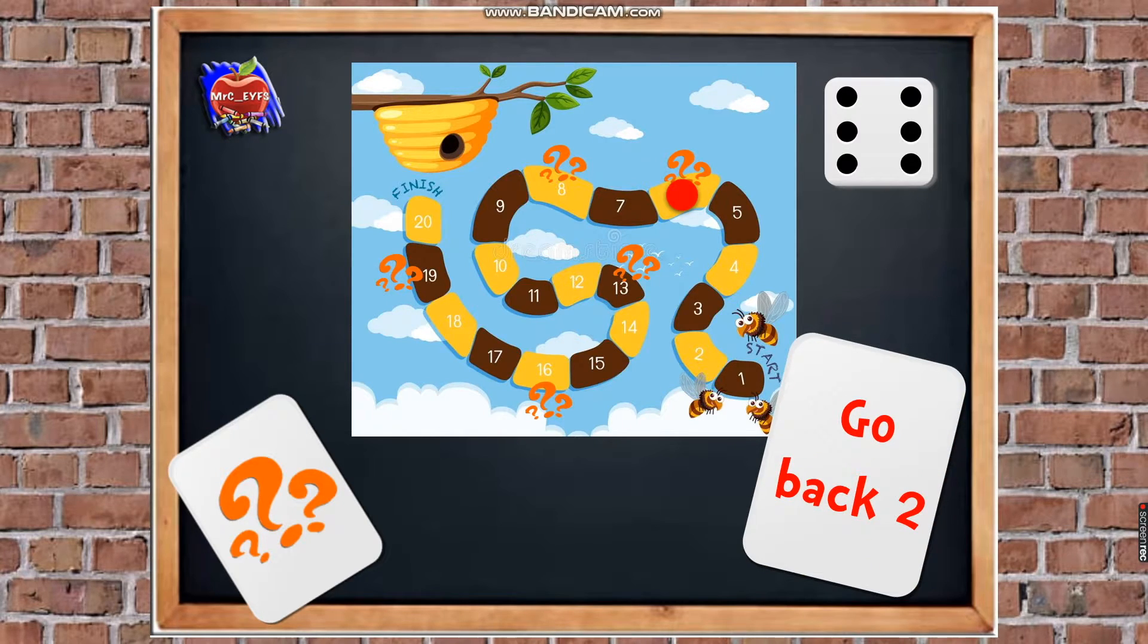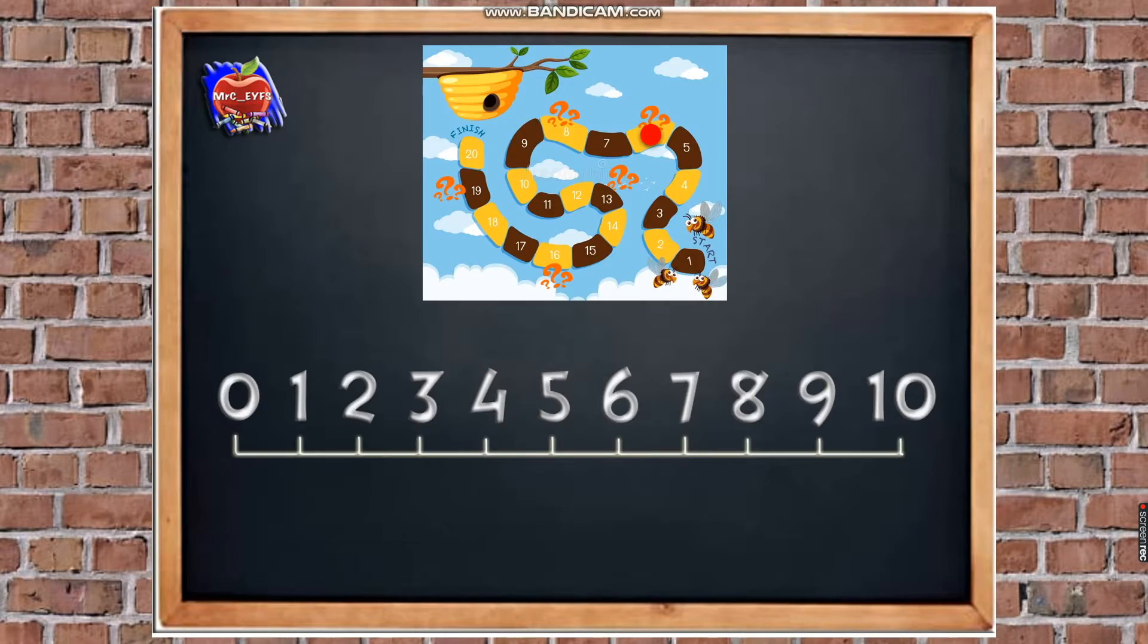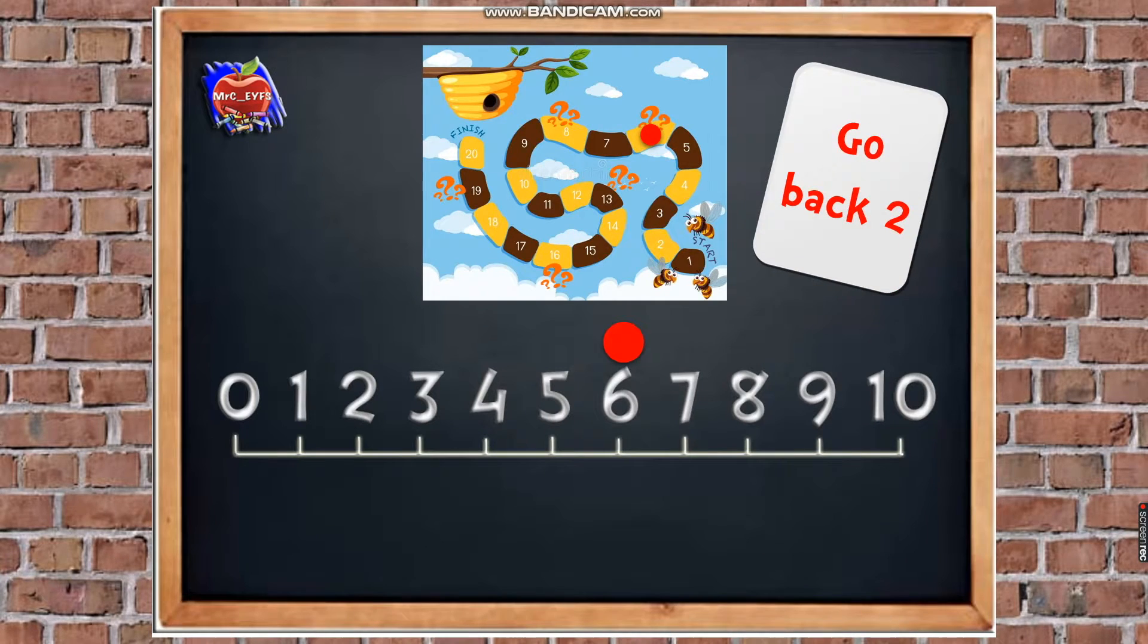It says, oh, go back 2. So that means I've got to move back 2 spaces. Well I'm going to use my number line to help me with this. So let's go to the next one. You can see I've got my board game at the top, and I've got my number line from 0 to 10 now. So it told us that we needed to count back 2, didn't it? So go back 2.